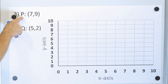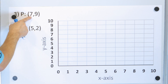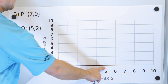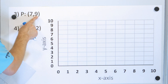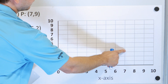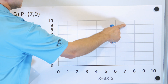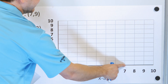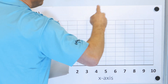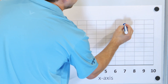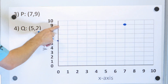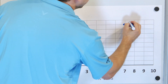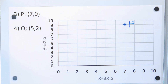Next, point P is 7 comma 9. X is 7 and y is 9. So all we do is go on the x-axis to 7, which is right here, and then from there we go up 9 units: 1, 2, 3, 4, 5, 6, 7, 8, 9. Notice that y is 9 and x is 7, so 7 comma 9 means the point will be right here. The label is point P.